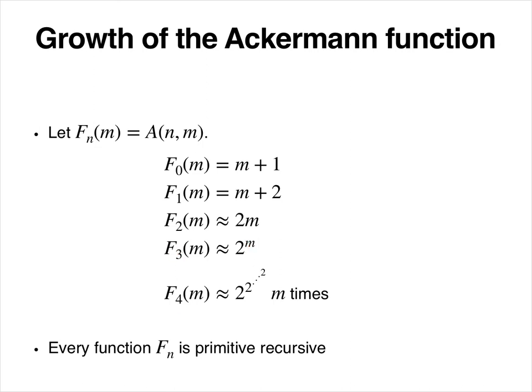f_4 is a tower of exponent 2 to the 2 to the 2, and so on, m times. What you see is that the Ackermann function essentially iterates the basic operations. It iterates plus 2 times, then it iterates times to exponential, then passing from f_3 to f_4, it iterates exponentiation, and so on.